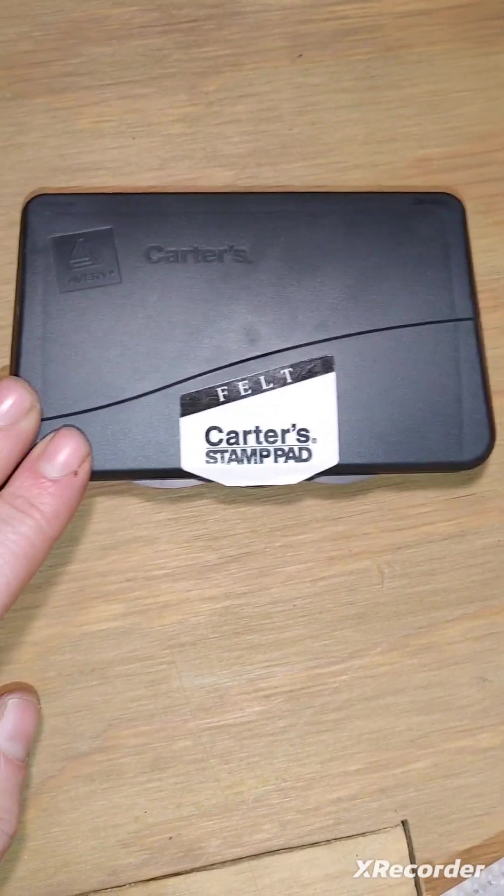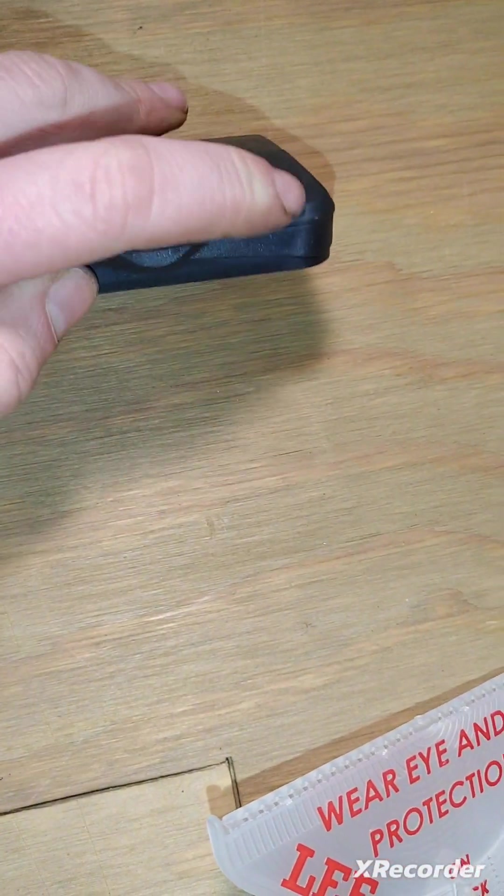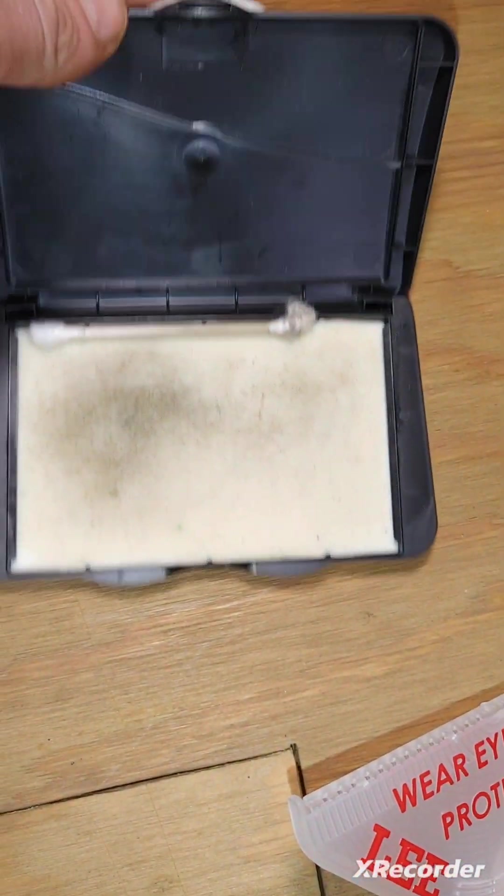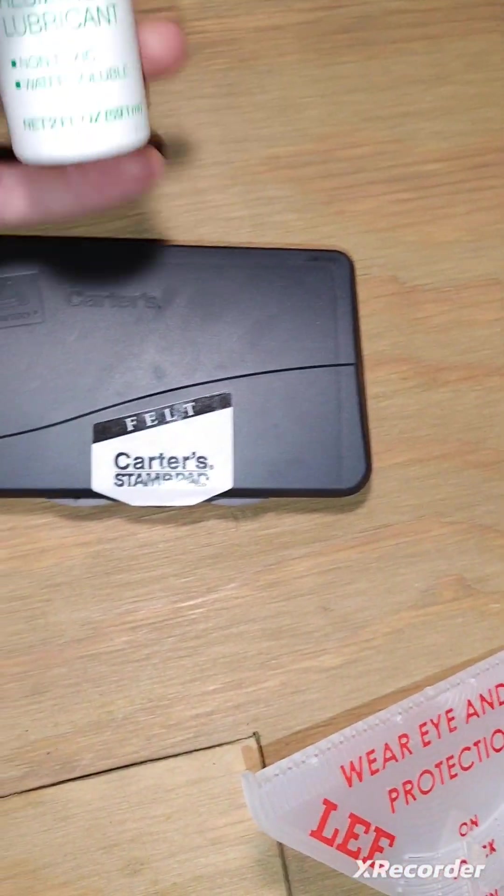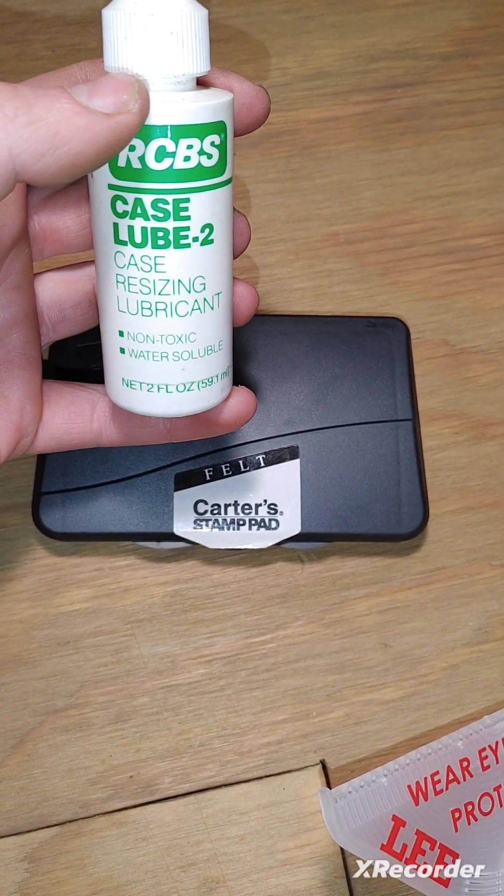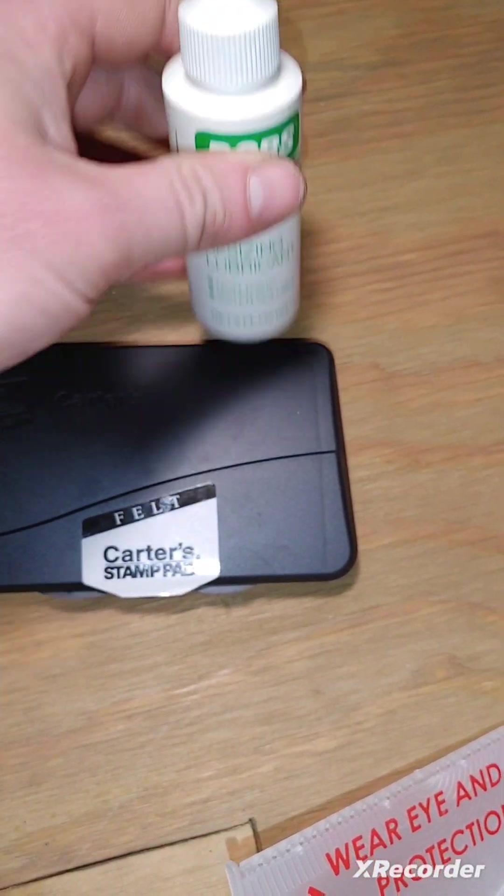Here we just got a plain old stamp pad, felt stamp pad from Walmart. A couple bucks. It's what I use for my lube. Just some basic lube. A couple ten, fifteen dollars.